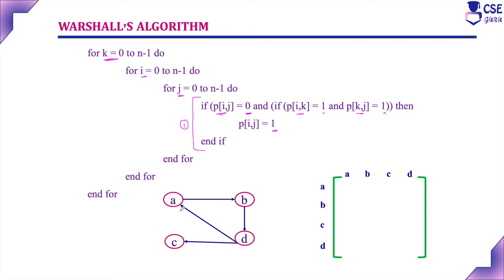In our example graph, consider vertex A. From A, there is a path from A to B — since directions are given, we consider them. Row-wise we consider A, column-wise we consider B, so position A-to-B is marked 1. A to C has no path: 0. A to D also has no path — there is only a path from D to A — so that position is also 0. A to A: no self-path, so 0.